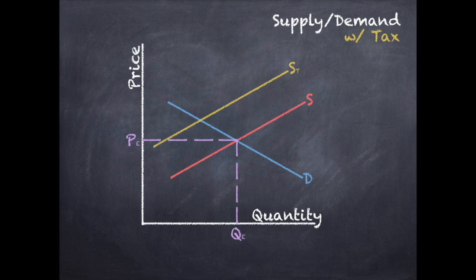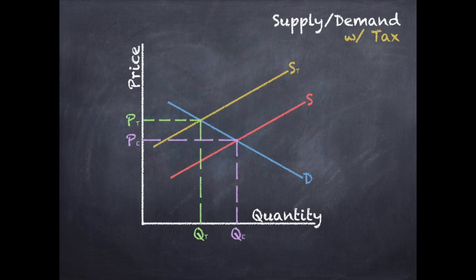Just remember that if you add the tax to the demand curve and the responsibility for the tax gets shifted onto the consumer — which is something we'll talk about later — you will have the same numbers come up once you do all the calculations, which we will get to later. What's going to happen is that this tax is going to cause a new equilibrium point. Well, it's not technically an equilibrium point because you're not in equilibrium, but it's going to create a new point that we're going to look at.